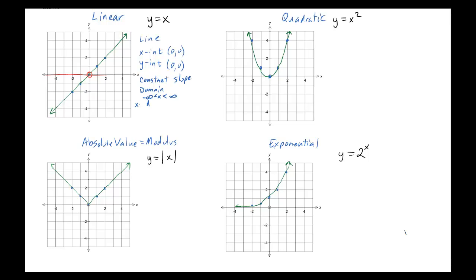Another way to say this is that x is all real numbers, meaning x can be any real number. It can't be all numbers because it can't be imaginary numbers — we're not going to worry about imaginary numbers this year. There's also a third notation where a symbol that looks like an E means 'is of the set of,' and the R with two parallel lines means real numbers, so x is of the set of real numbers. Similarly, the range goes up and down forever, so y is also of the set of real numbers.